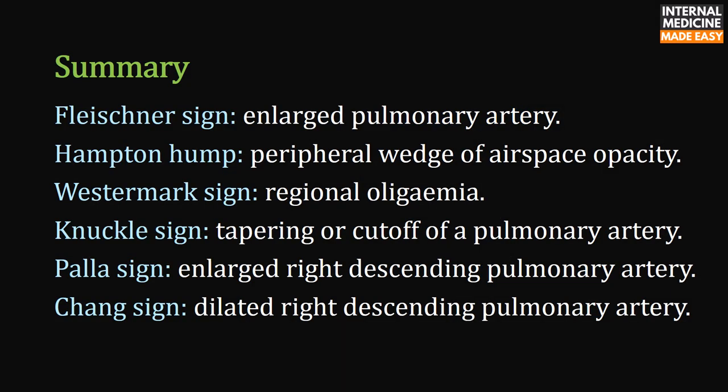Summary of the signs discussed: Fleischner sign refers to an enlarged pulmonary artery. Hampton Hump refers to a peripheral wedge of airspace opacity. Westermark sign refers to regional oligemia. Knuckle sign refers to tapering or cutoff of a pulmonary artery. Palla sign refers to an enlarged right descending pulmonary artery. Chang sign refers to a dilated right descending pulmonary artery.